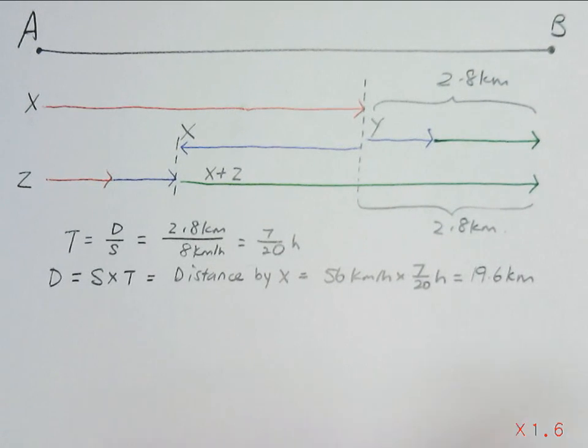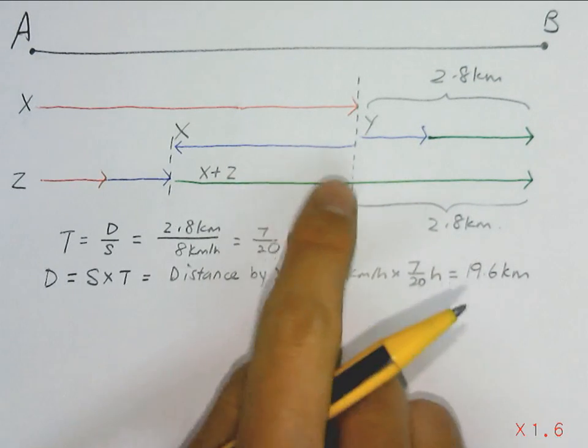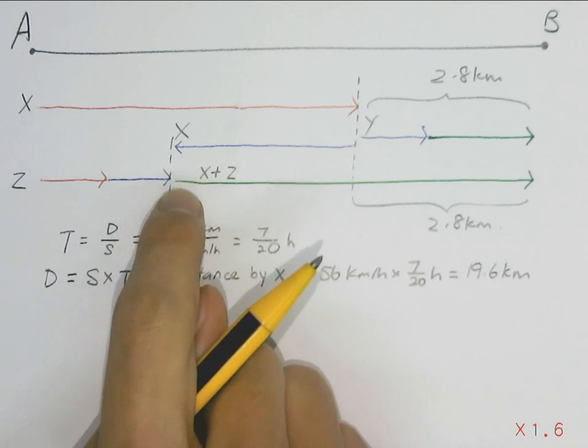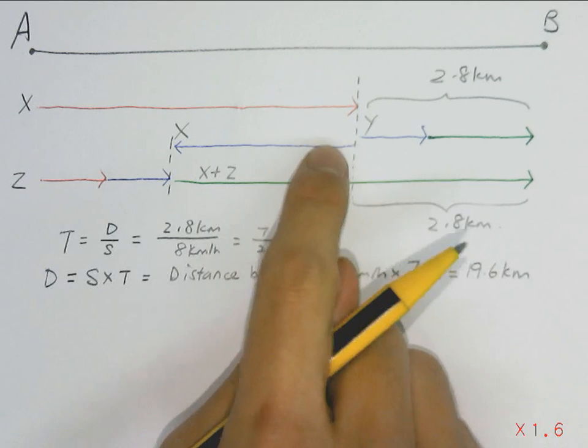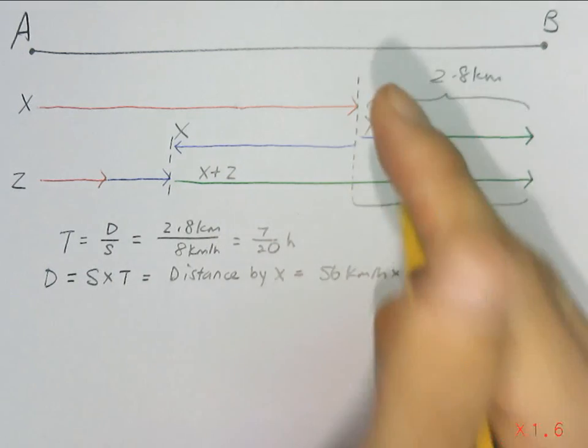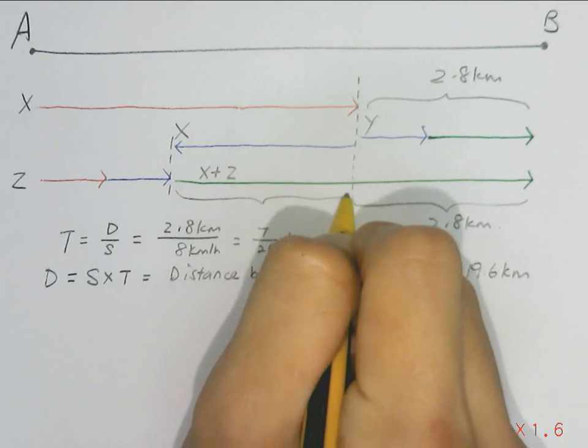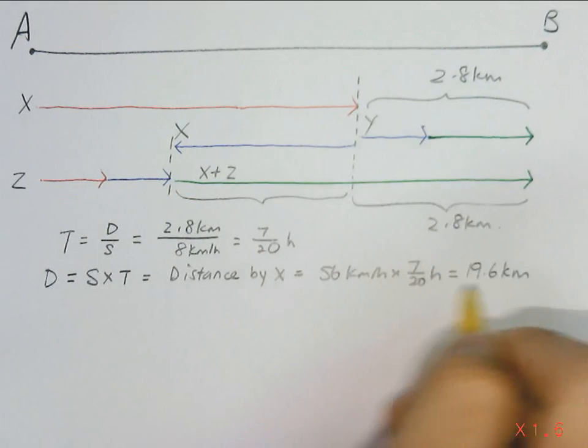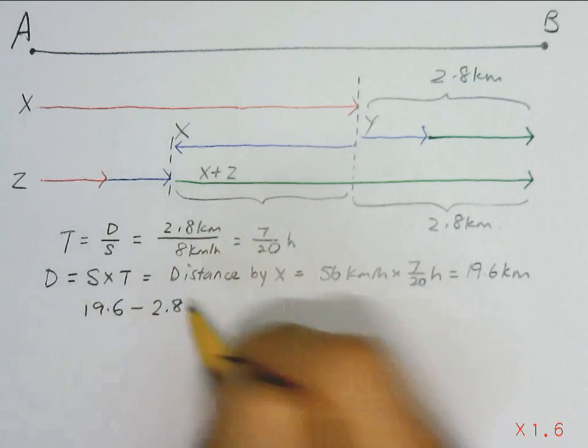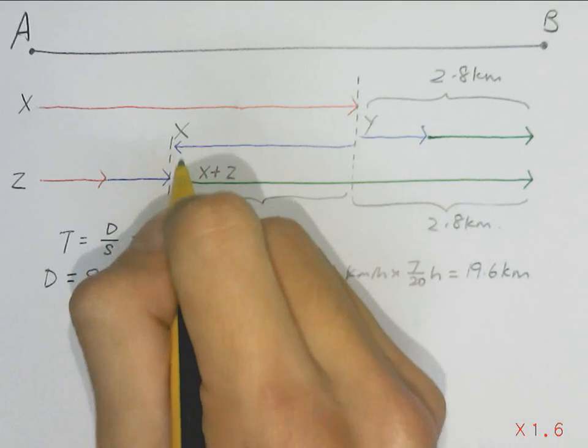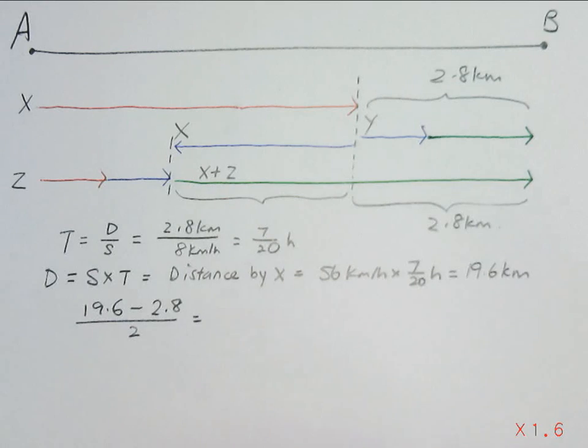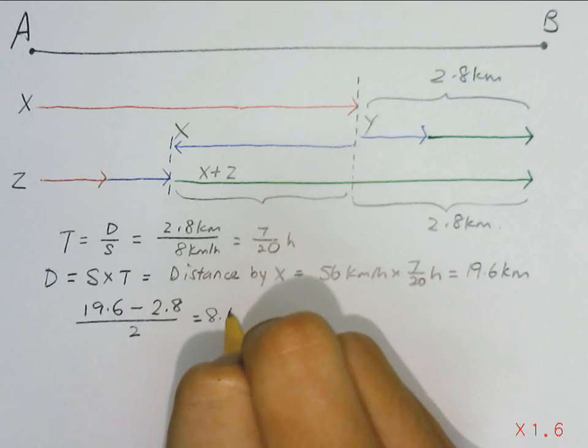Which is the distance moved by X from here to here, the blue arrow and the green arrow. Notice that this portion is overlapped. So we can find each of this portion by taking the difference 19.6 minus 2.8 km, which is twice this distance already, then divided by 2. This will give us 8.4 km.